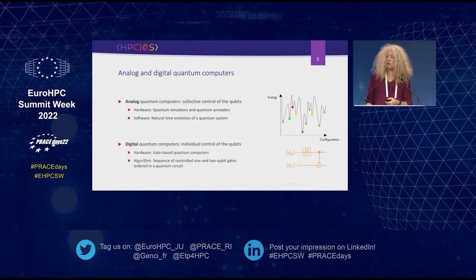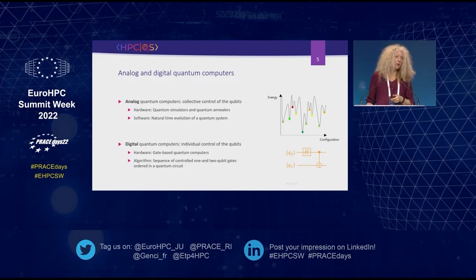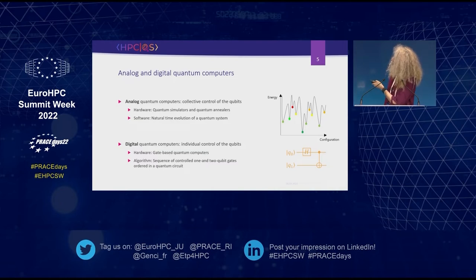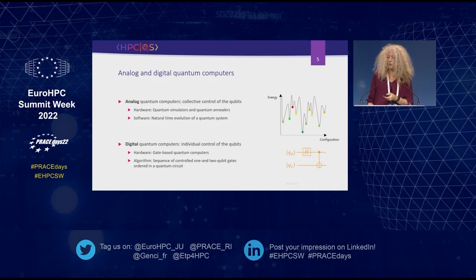For digital, gate-based quantum computers, we have individual control of the qubits, and an algorithm looks different: it is a sequence of quantum gates — one- and two-qubit gates — arranged in an ordered circuit. Here you can see a very small circuit where the horizontal lines denote qubits, with a Hadamard gate and a CNOT gate (a two-qubit gate). Of course, you can make these circuits as large as you like.